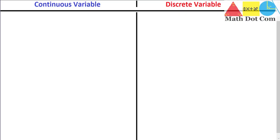Hello everyone. Today we are going to learn the difference between continuous variable and discrete variable. I'm going to tell you the very important differences, the basic differences between the two types of variable so that you can easily identify whenever you are given different variables and asked to identify which variable is continuous and which is discrete. So let's start with the first difference.